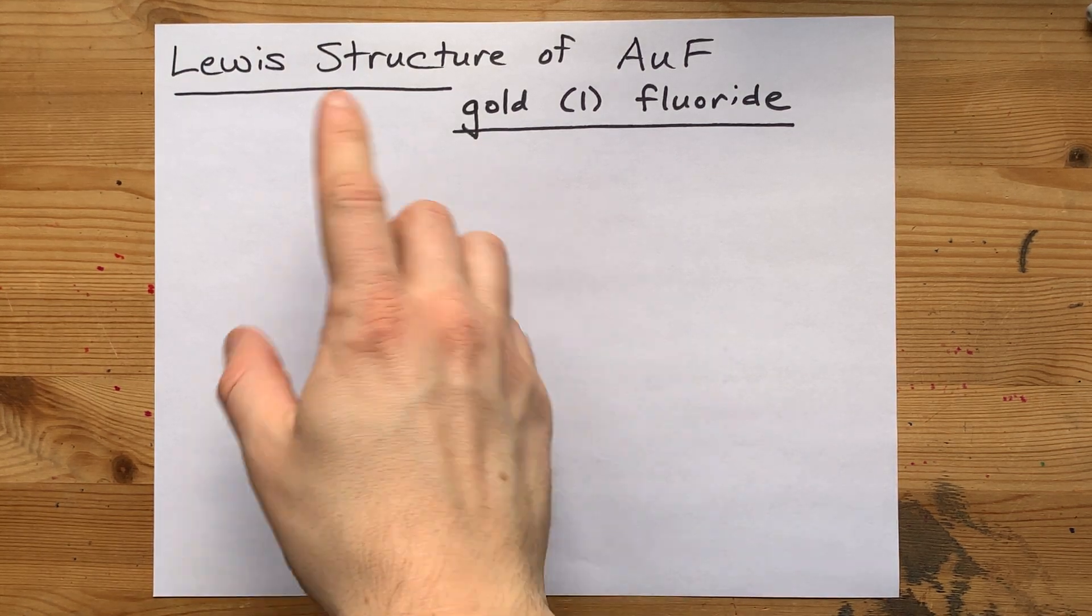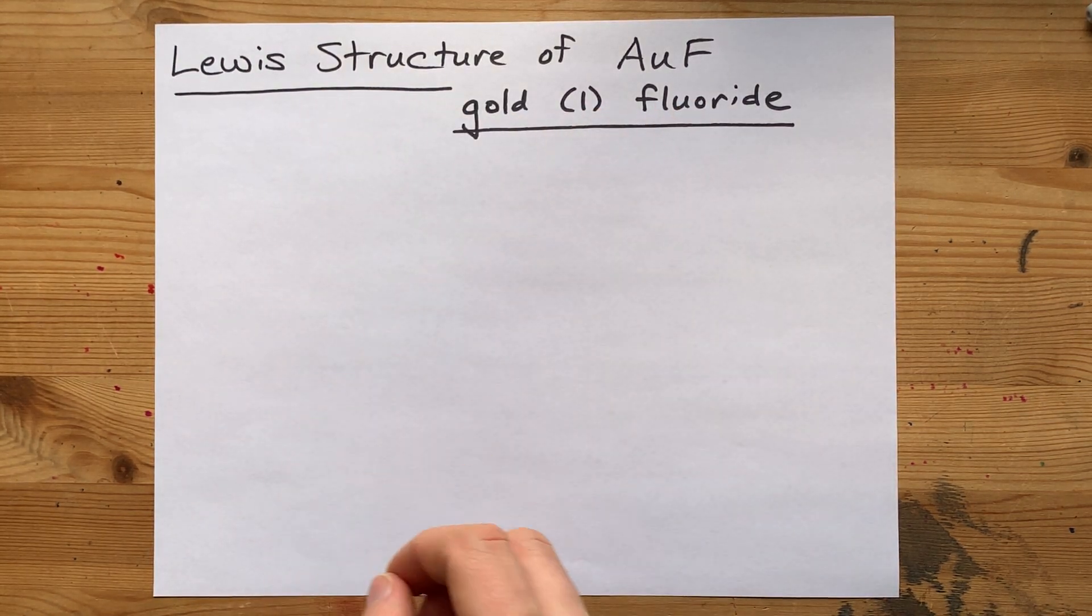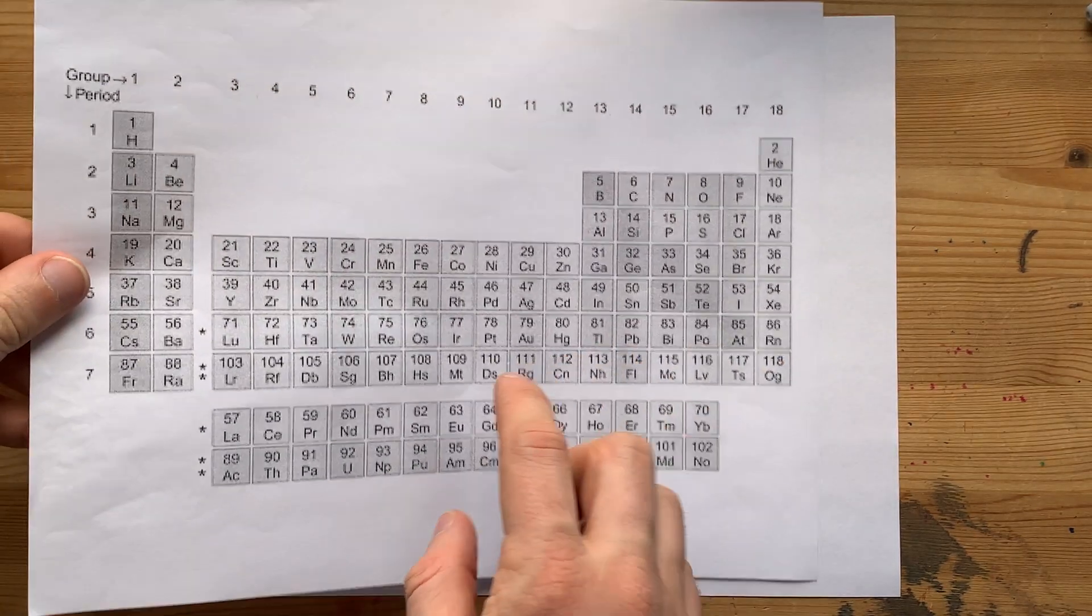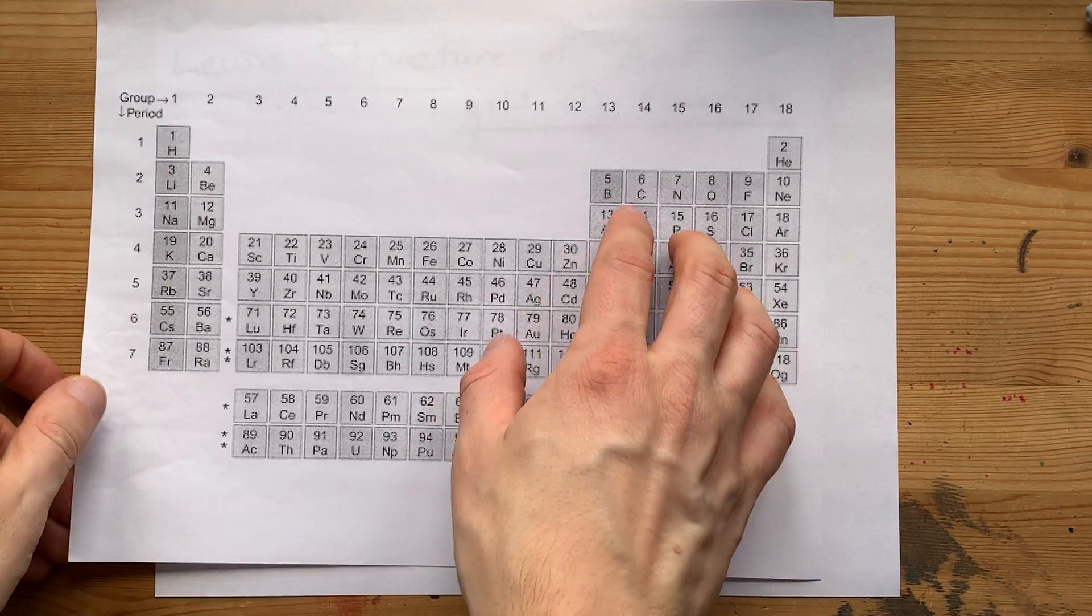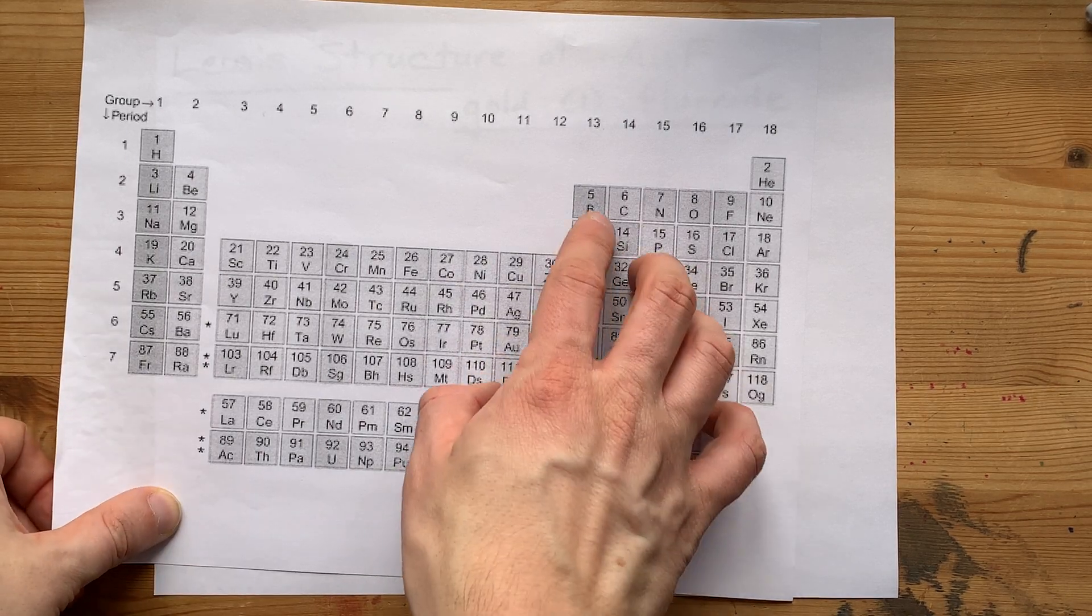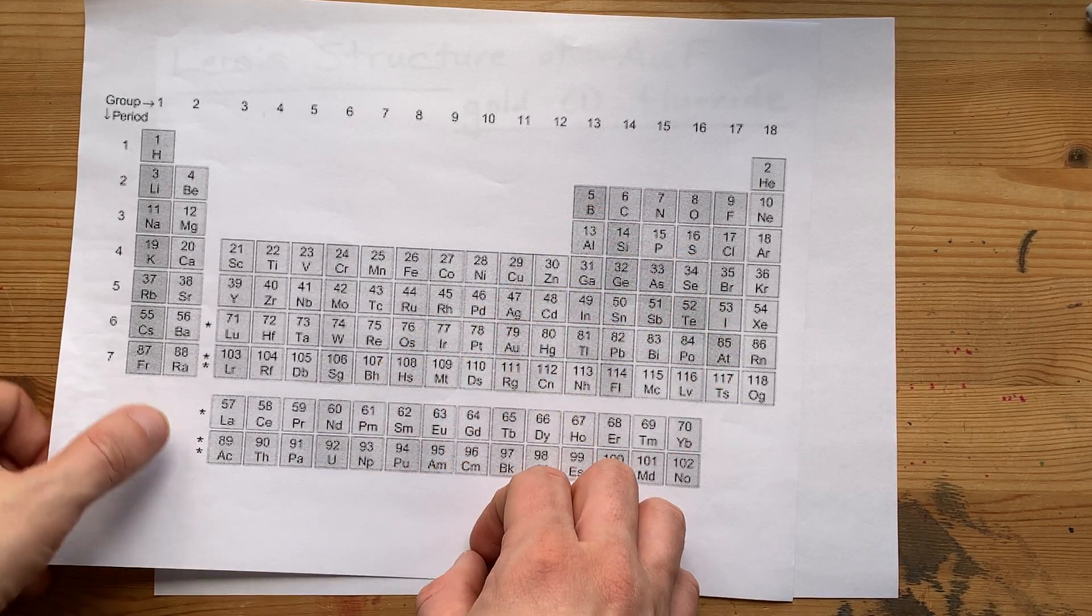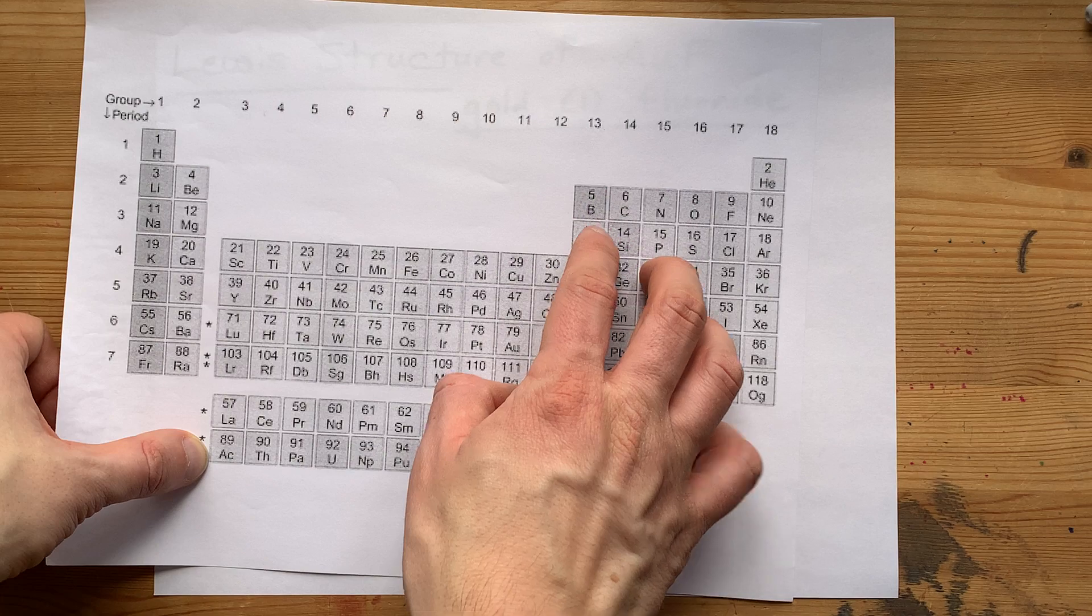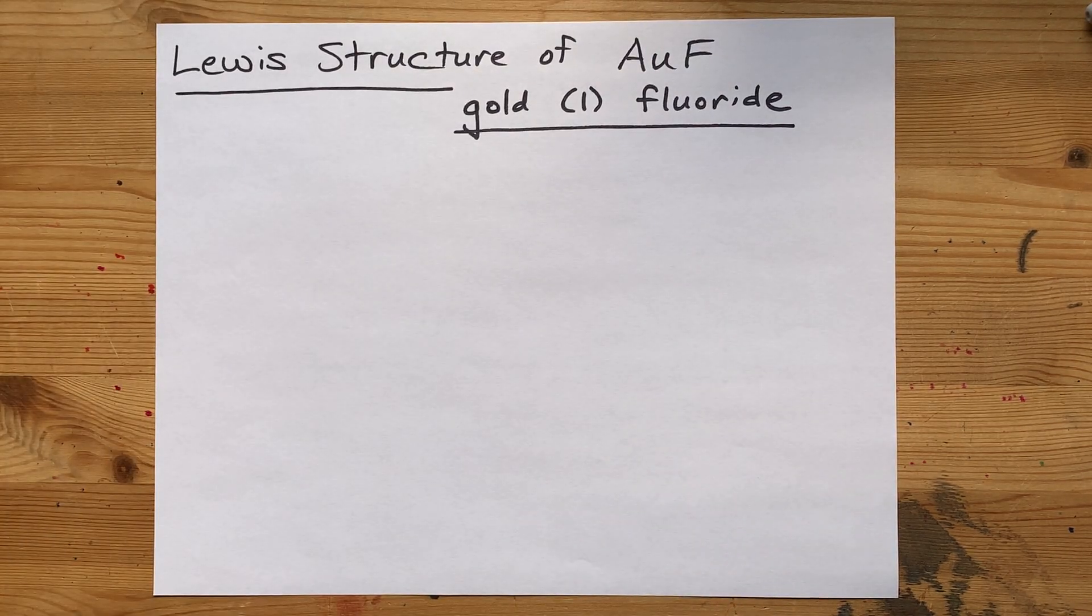Had a request to do the Lewis structure of gold one fluoride. This is a fun one. Gold is definitely a metal. It's the metal that everyone knows is a metal because it's gold. It comes from the left-hand side of the periodic table. Fluorine is a non-metal from the right-hand side of the periodic table.